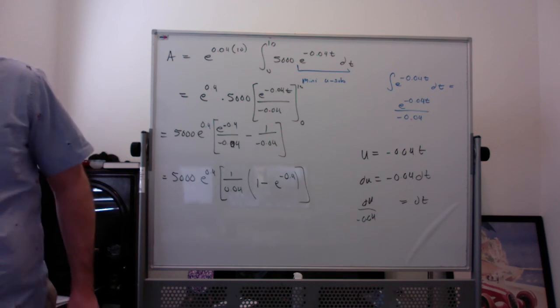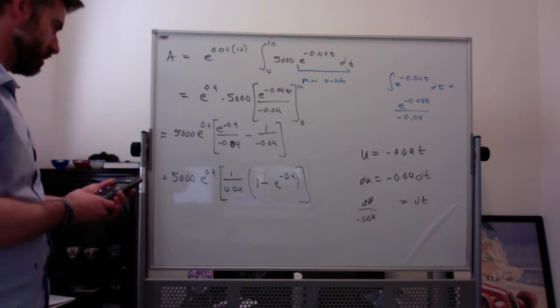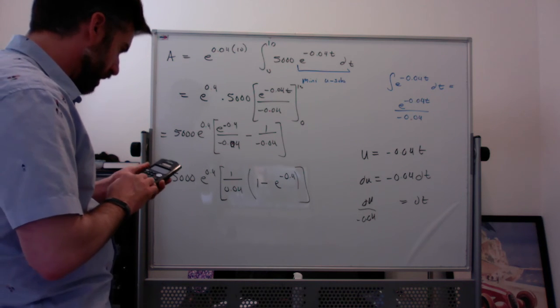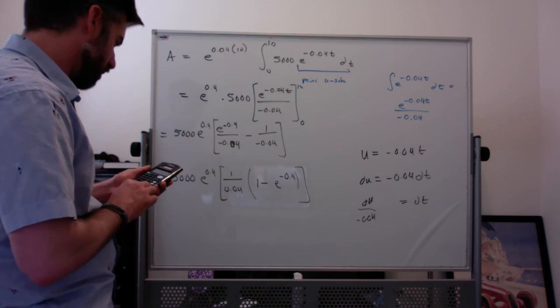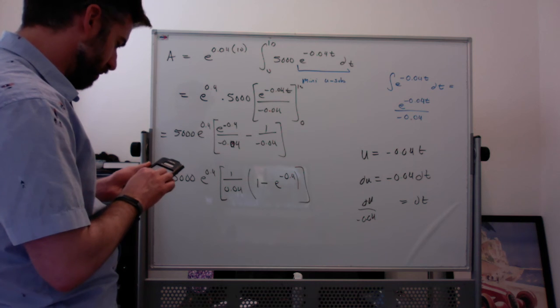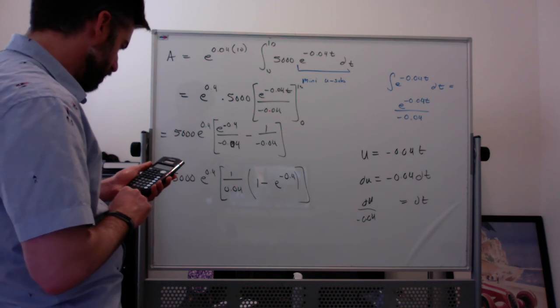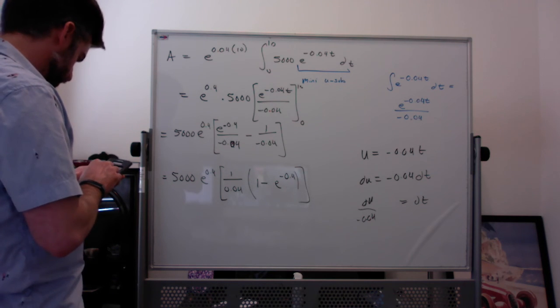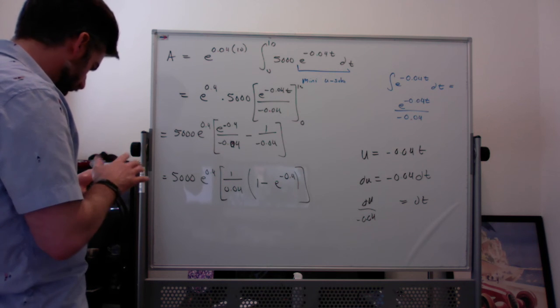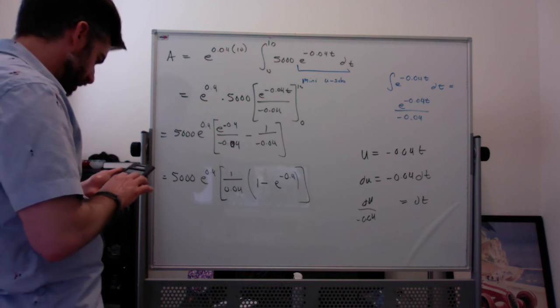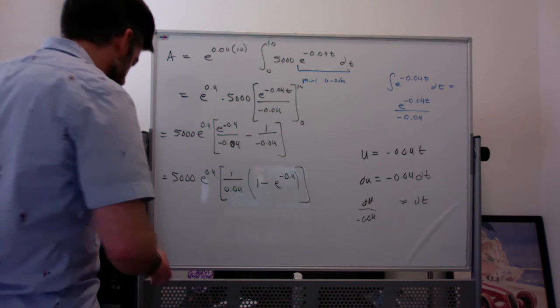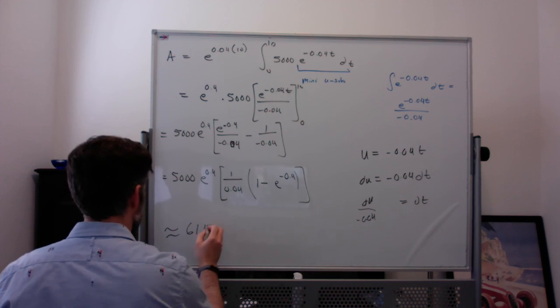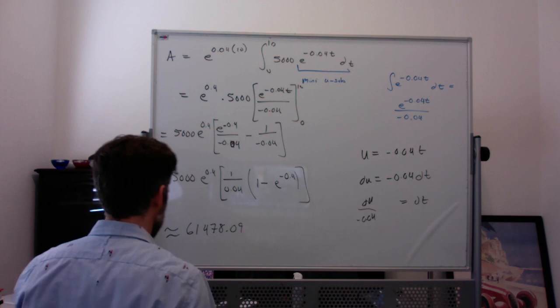Let's see. We've got 1 minus E to the negative 0.4. That's 0.32 and then dividing by 0.04. And then I'm getting 8.7 and then multiplying it by E to the 0.4. Sorry. One sec calculator. And then times 5,000. I'm getting $61,478.09 approximately. Around that. It was 0.087.